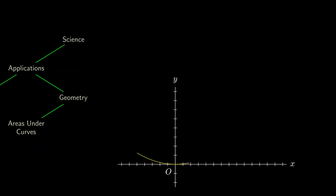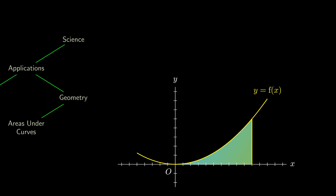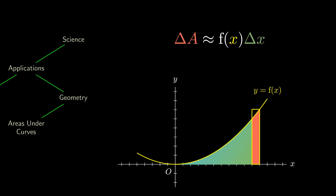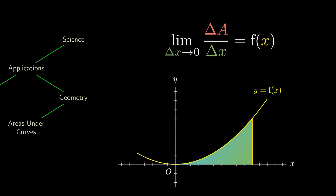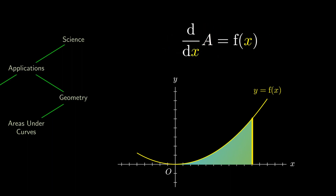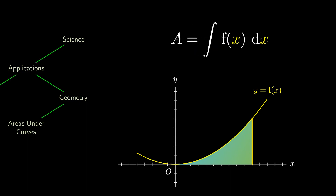When considering the function y equals to f of x, we might be interested in calculating the area under the curve. If we nudge the right-hand line a little bit to the right, we'll obtain the red increment in area, which is approximately equal to a rectangle with base delta x and height f of x. As we let this increment get smaller and smaller, we're going to approximate the function value f of x. But the right-hand side is nothing more than the definition of the derivative of A with respect to x. So integrating on both sides, the area is given by an integral.